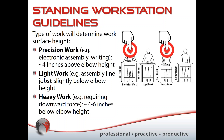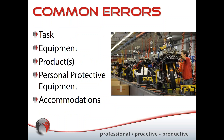Beyond task type, other things to think about when using anthropometrics include the equipment or tools employees will use, the products they'll be working on, any personal protective equipment they may have to wear, and any accommodation or accessibility issues that may come into play.